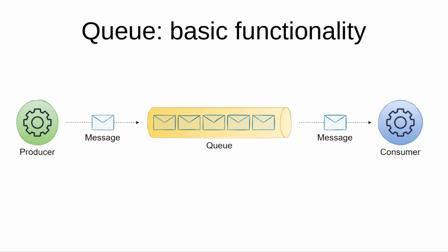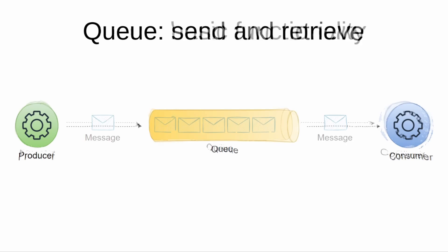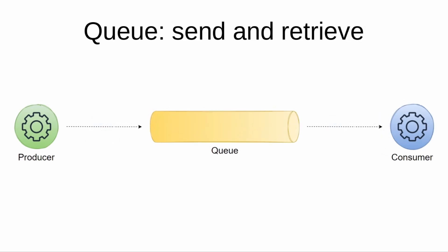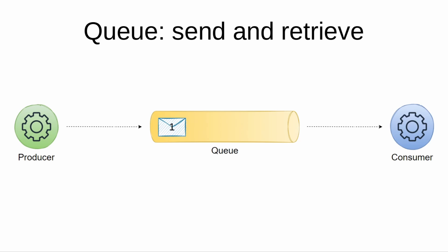Traditional message queue systems provide a mechanism for asynchronous service-to-service communication. To send a message, a component called a producer adds a message to the queue. The message is then stored in the queue until another component called a consumer retrieves the message.